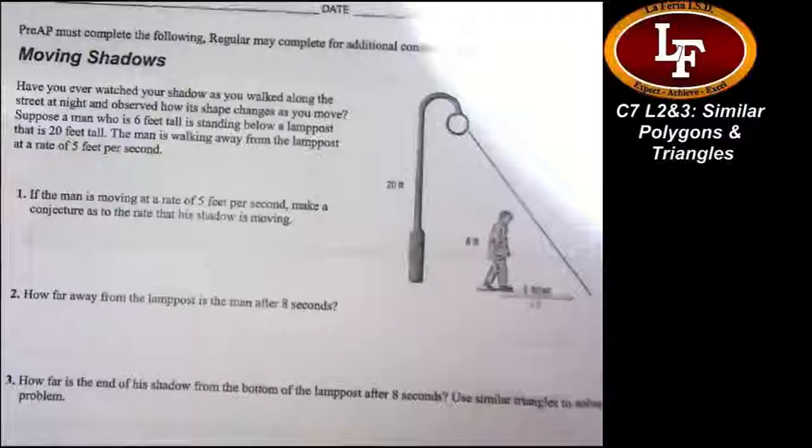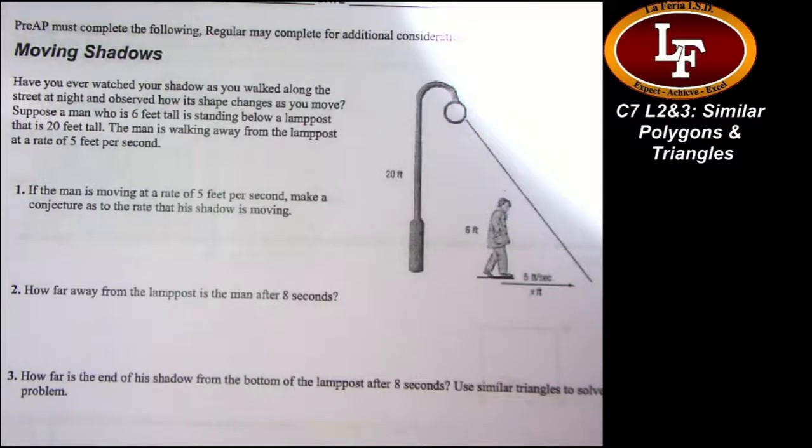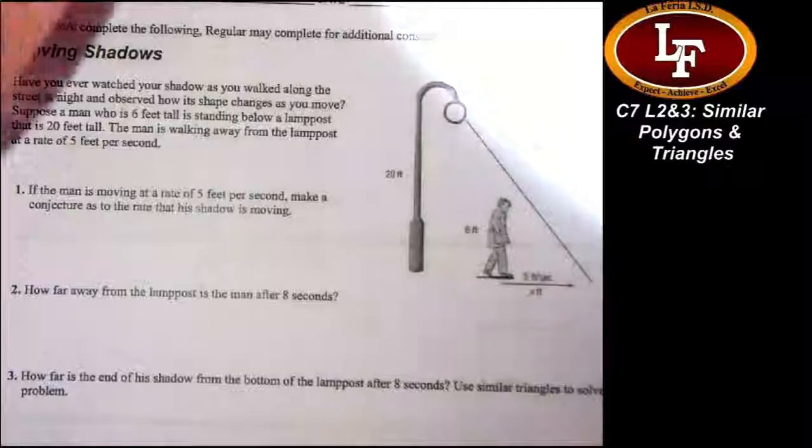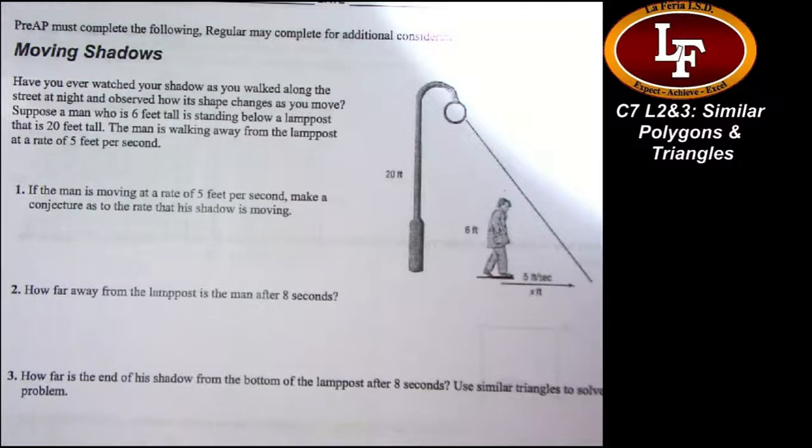Okay? All right. This is a challenge sheet. Pre-APs, you must try this one. Try it on your own. See how far you can get. Regular students, do this after you're done with the rest. Give it a shot. I will take it for additional consideration, but by no means do you need to stress out about this page if you're struggling with the first part of the assignment. Okay? All right. Thank you very much for joining us today. Can you give me a pass? Yes. Thank you.